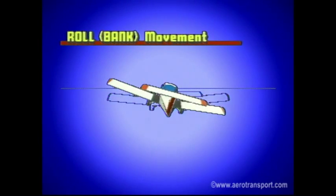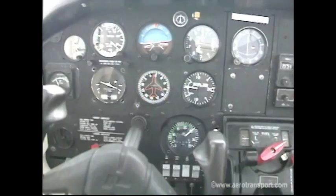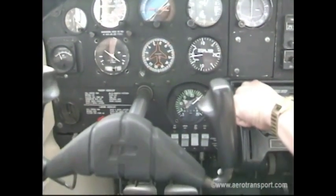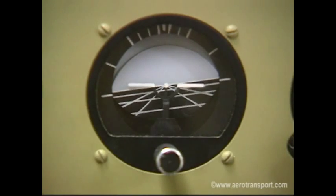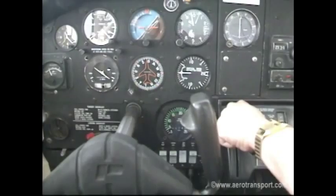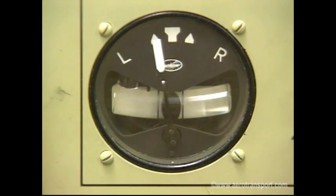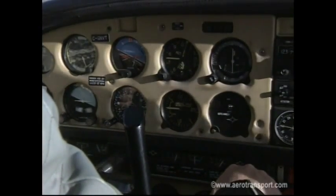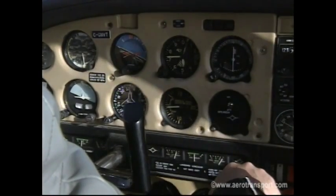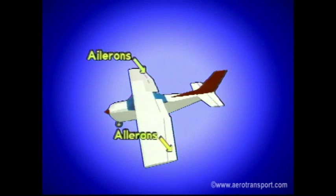Bank attitudes refer to the attitude of the wings relative to the datum. It is caused by the rolling movement of the aircraft around the longitudinal axis and is produced and controlled by the ailerons. When an aircraft is banked, the aircraft in the attitude indicator will be banked in relation to the horizon bar. The turn and bank indicator needle will be deflected in the direction of the turn. In a coordinated turn the ball will be centered. The heading indicator will show a change in direction — for left turns it will show decreasing degrees of heading; for right turns you will notice an increase in degrees of heading.